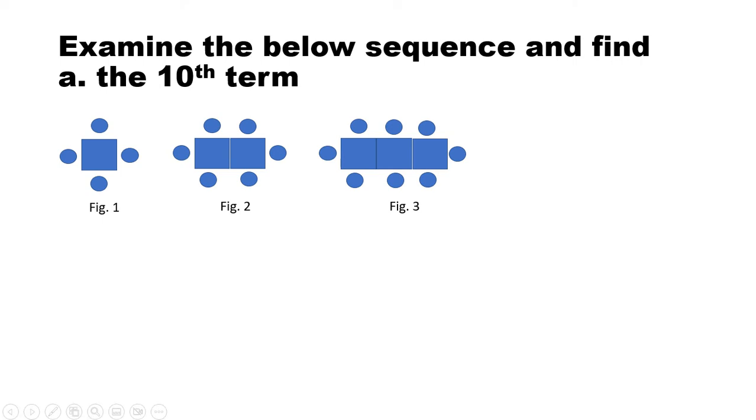Now this is another sequence here. Examine the below sequence and find the 10th term. So just as what we did earlier, we are going to draw a table and record the values here. So figure number 1 had 4 circles, figure number 2 has 6 circles, figure number 3 has 8.